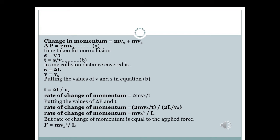Using the equation s = vt, we substitute distance 2L and velocity vx to find time t = 2L/vx. The rate of change in momentum per collision is Δp/t = 2mvx divided by 2L/vx, which simplifies to mvx²/L. This gives us the force exerted by one molecule on the wall.